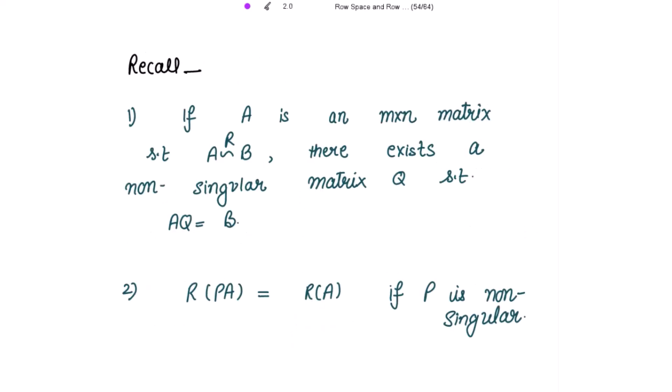Let's recall these two results first. If A is an m by n matrix such that B is obtained from A by applying row operations, then there exists a non-singular matrix Q such that B equals Q times A. Second result: the row space of PA equals the row space of A if P is non-singular. These two results we have already proved in the previous content.